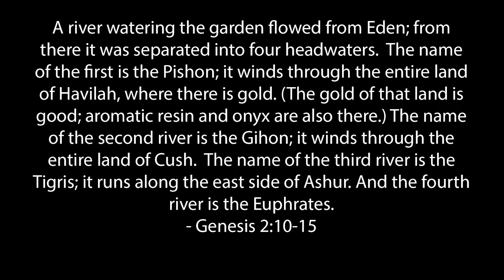There's one river that flows from Eden and splits into four rivers. In Genesis 2 we find this: a river of water in the garden flowed from Eden, and from there it was separated into four headwaters. The name of the first is the Pishon — it winds through the entire land of Havala where there is gold, and aromatic resin and onyx are also there. The name of the second river is Gihon, winding through the entire land of Kush. The name of the third river is the Tigris, running along the east side of Asher. And the fourth river is the Euphrates.